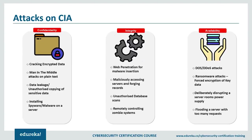Next is integrity — maintaining the consistency, accuracy, and trustworthiness of data over its entire lifecycle. Data must not be changed in transit, and steps must ensure it cannot be altered by unauthorized people. Measures include file permissions and user access controls. Version control prevents erroneous changes by authorized users. Some data includes cryptographic checksums for verification, and backups or redundancies must be available to restore affected data to its correct state.